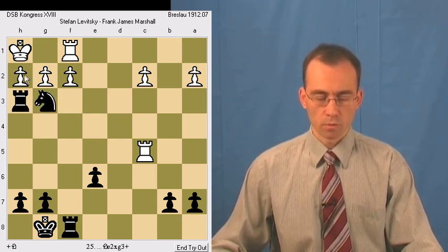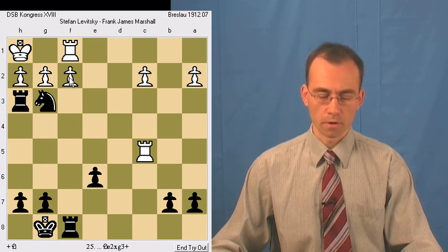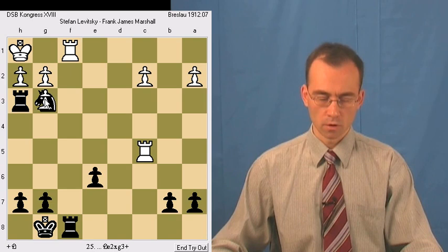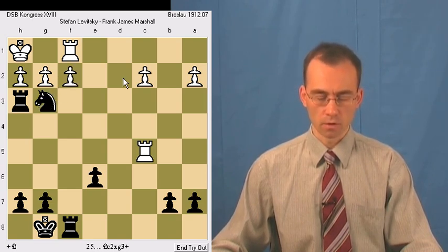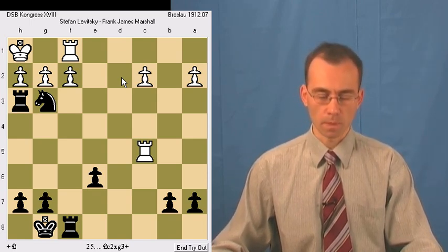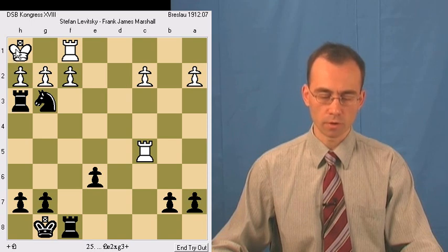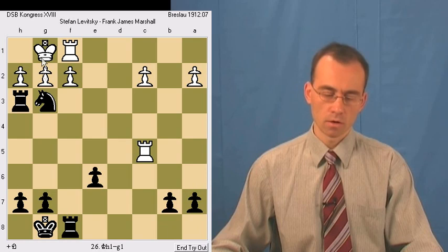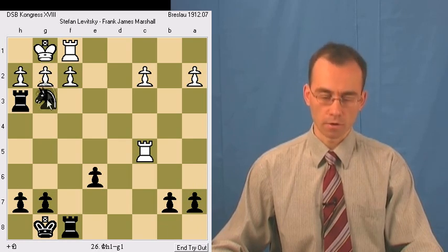And this pawn cannot take knight. If this pawn takes knight, then rook takes rook mate. So in this situation the only possibility to avoid mate is to move king to g1, and then knight takes rook.